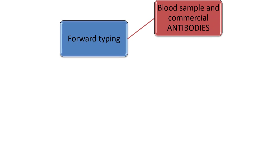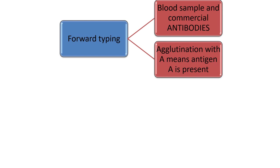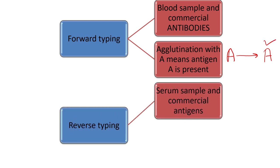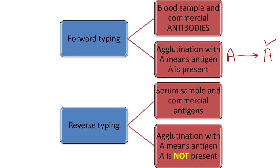To summarize: in forward typing, we use the blood sample which has the patient's antigens, and we add commercially prepared antibodies. If there is agglutination with antibody A, it means antigen A is present. In reverse typing, we use the serum sample that contains the patient's antibodies, and we add commercially prepared antigens. Here, agglutination with antigen A does not mean A is present — it means A is absent, because the body has produced antibodies against A as a foreign antigen.